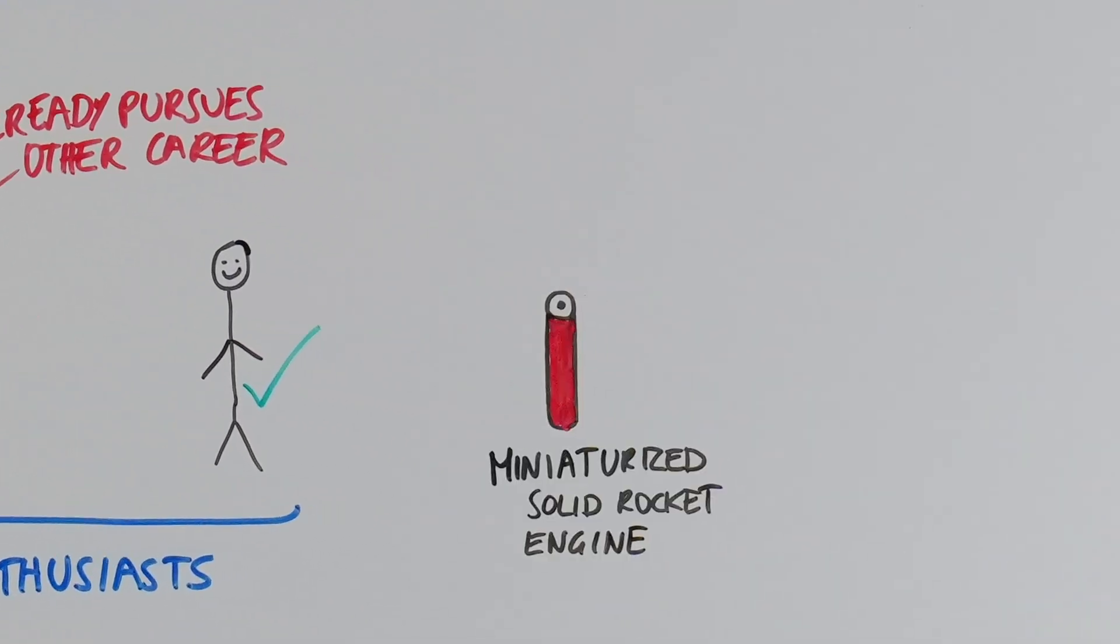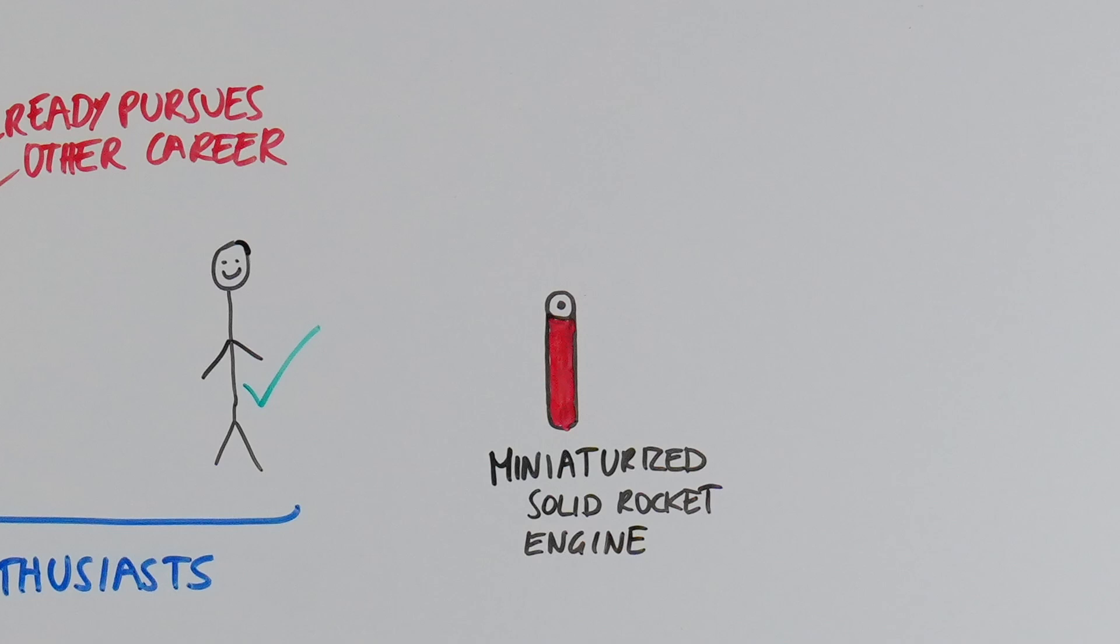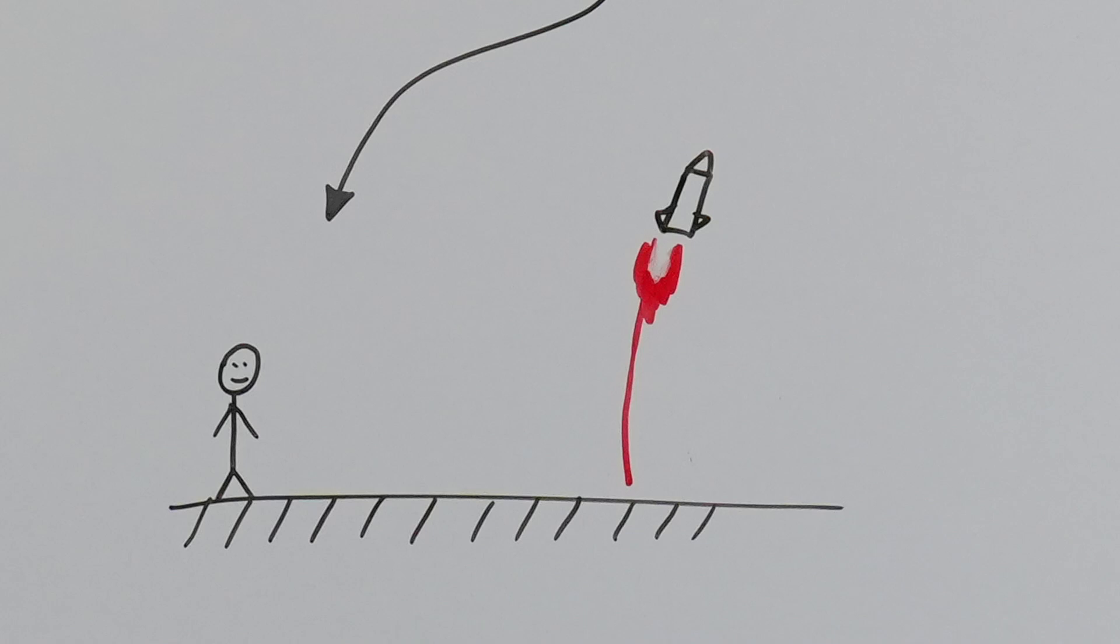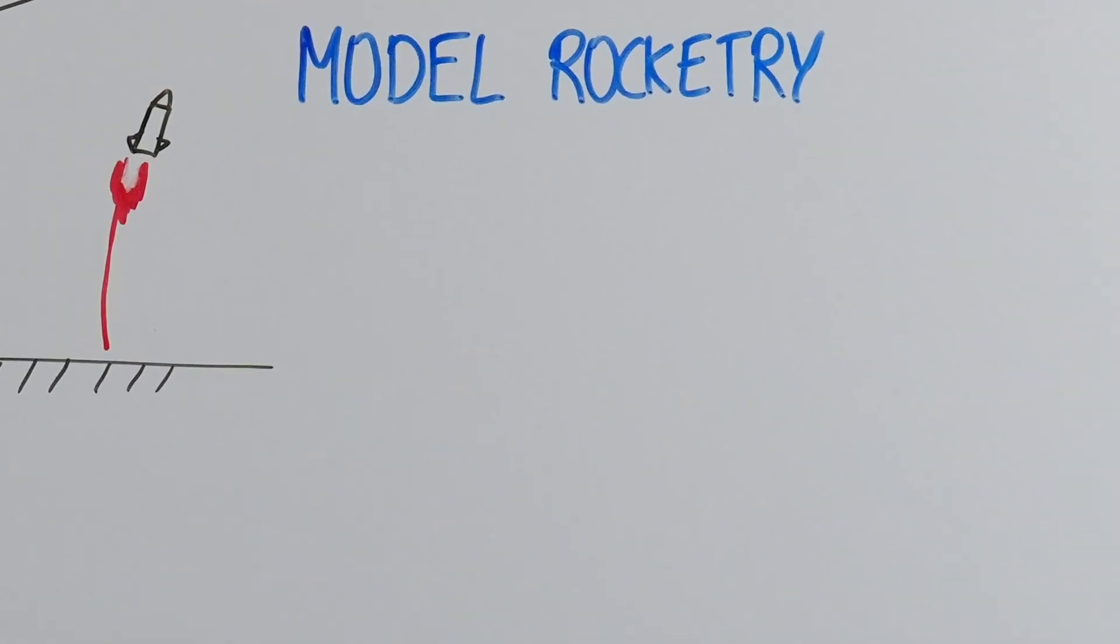Fortunately, the rise of miniaturized solid rocket engines from companies like Estes, Apogee, and Klima has made it possible for enthusiasts to engage with rocket science in a more accessible way. With them, aerospace enthusiasts can launch miniaturized rockets in their spare time. Through the offering of model rocket engines, a new hobby evolved: model rocketry.